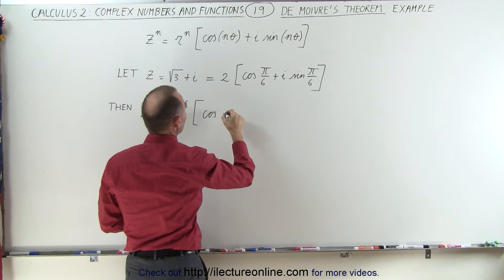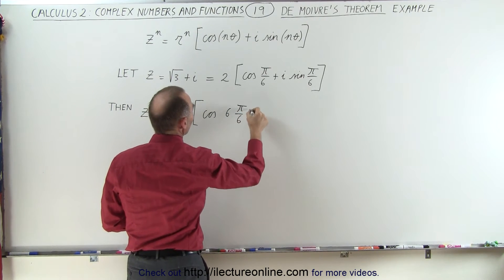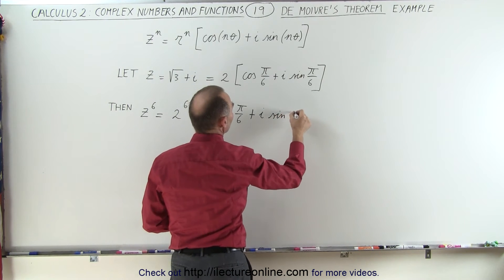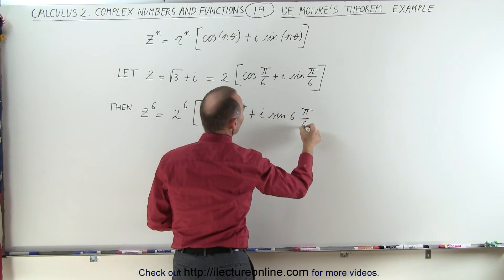Since n is 6, that would be 6 times pi over 6, plus i times the sine of 6 times pi over 6.